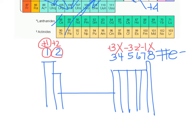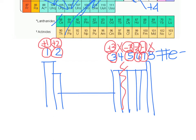Column 5 has 5 in the outer shell and tends to gain 3. Column 6 gains 2. Column 7 gains 1. Column 8 tends to be unreactive. That overview helps you understand the trends in the periodic table.